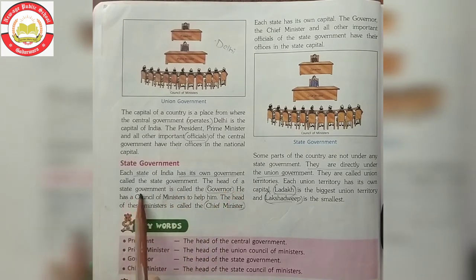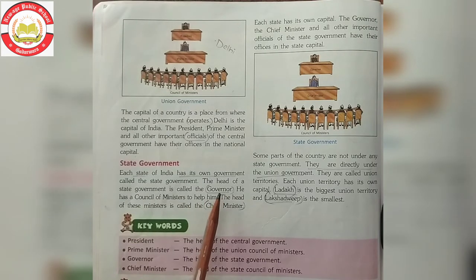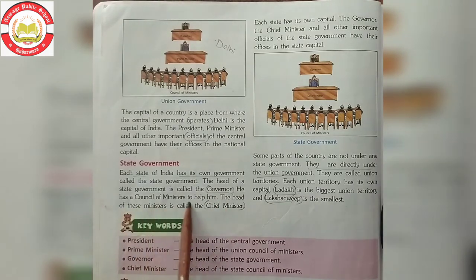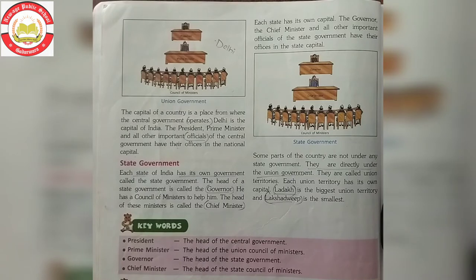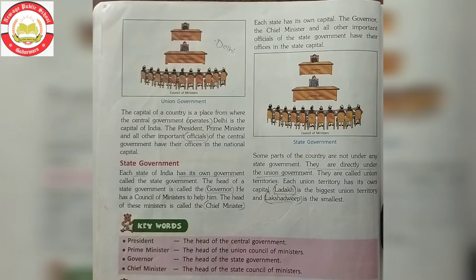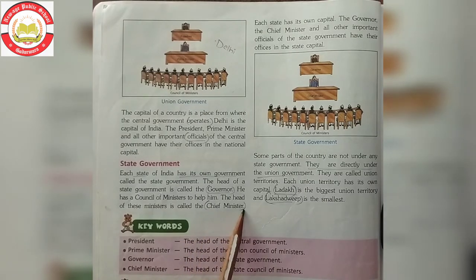The head of a state government is called the Governor. State government mein sabse bada adhikari ya jo head hai, wo Governor hai. He has a council of ministers to help him — similar structure follow hota hai jaisa central government mein ho raha tha. The head of these ministers is called the Chief Minister. In council of ministers ke head hain Chief Minister.